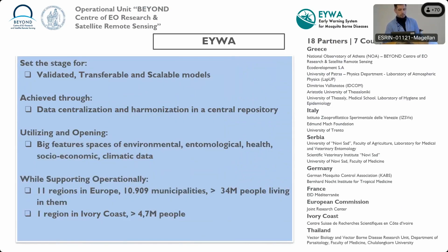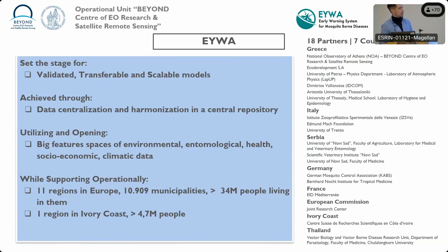Let me quickly introduce EIWA, a project that started by trying to create early warning models that are transferable and validated. We started with partners from many different countries — you can see them on the right — currently seven different countries and expanding, starting from five. We tried to achieve data centralization because there are health data and vector data, but they were siloed in different organizations. What we tried to do is achieve harmonization of the data and augment them with Earth observation data.